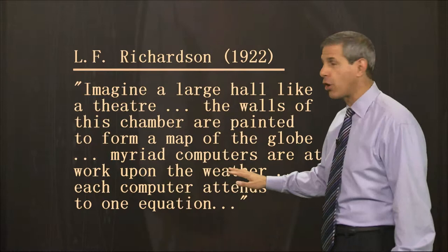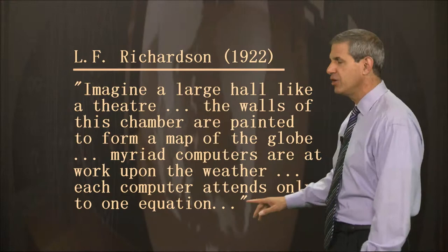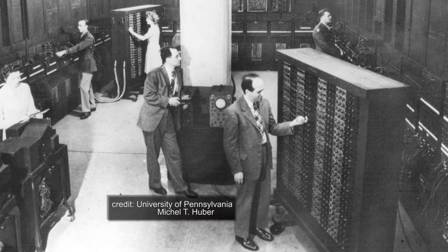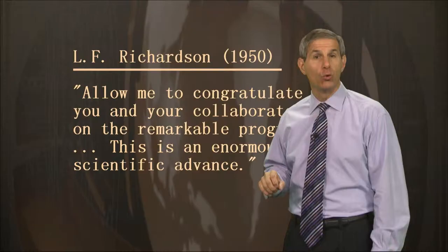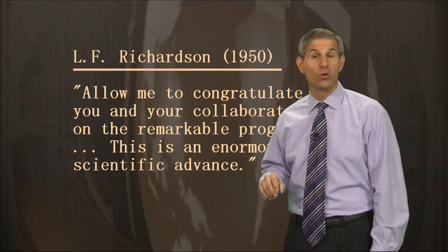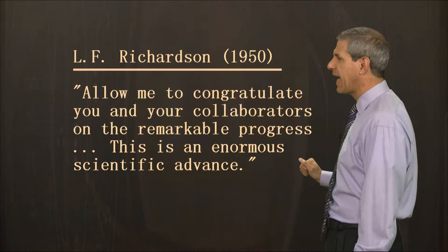It wasn't until 1950, with the first successful numerical weather forecast on an electronic computer called ENIAC, that the dream became a reality. When Richardson got word of that milestone, he wrote: 'Allow me to congratulate you and your collaborators on the remarkable progress. This is an enormous scientific advance.' Given what computer models have meant to meteorology, he sure was right about that.